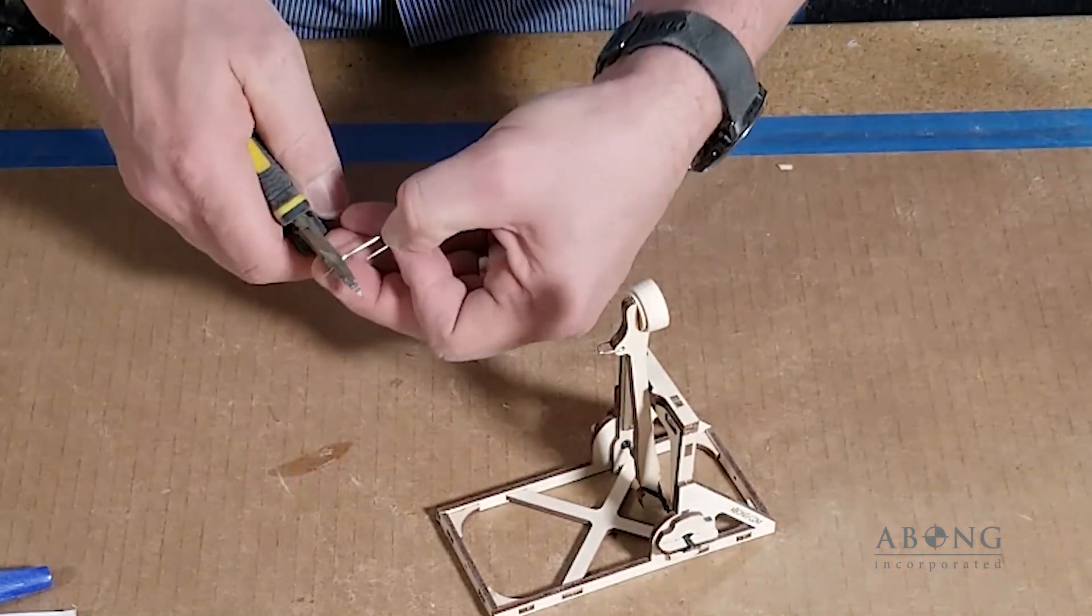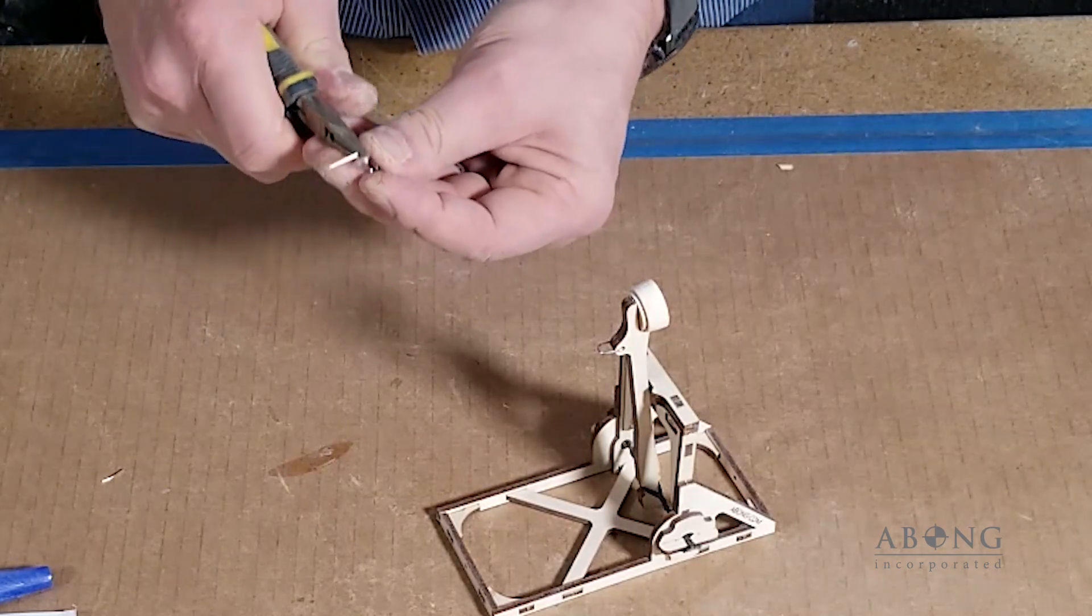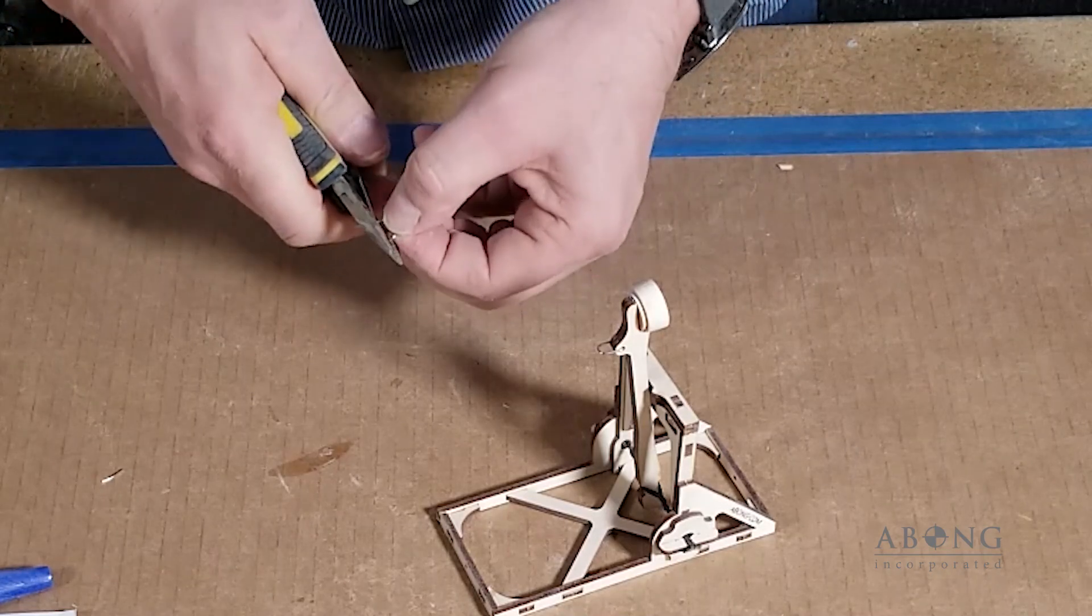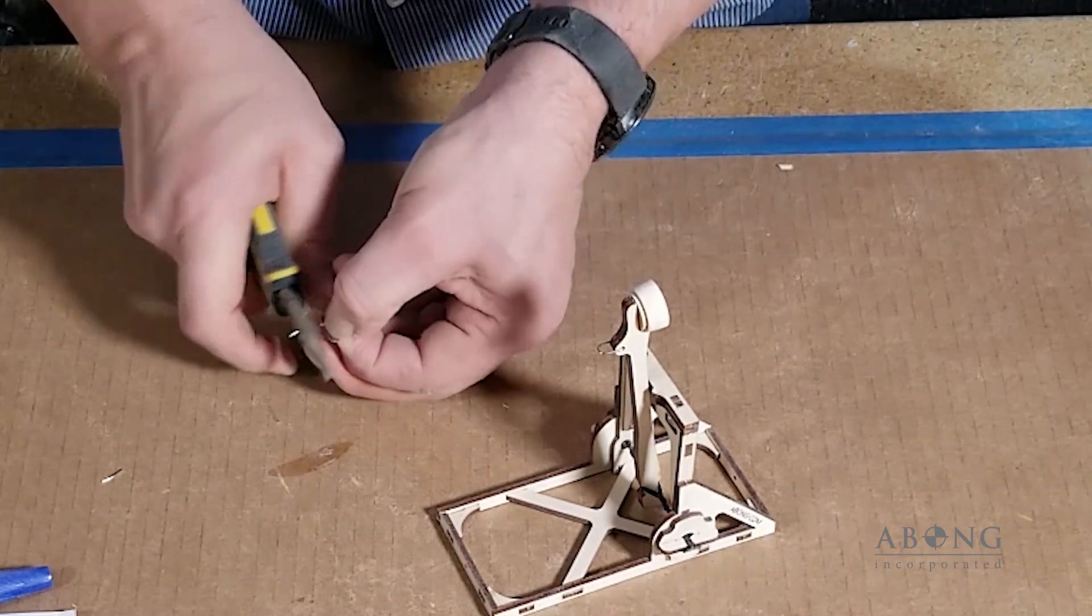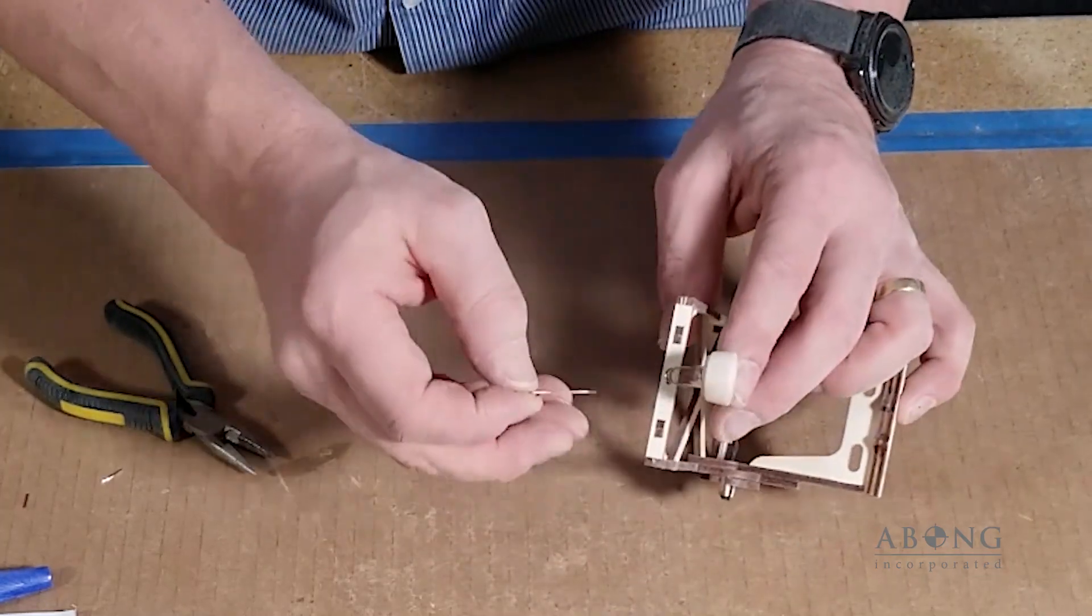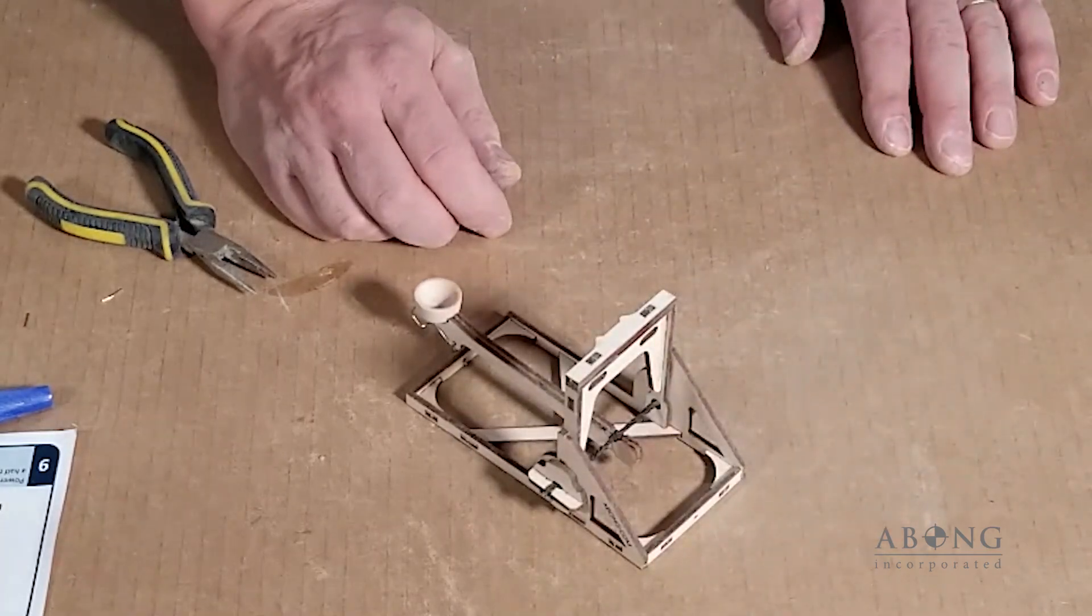Now we're just going to snip off the loose end of that, form a D in the short arm there, trim it up. And now that's your trigger. So the trigger goes into the back, catching the catch. You are now completely finished.